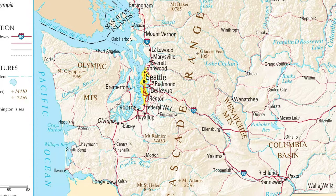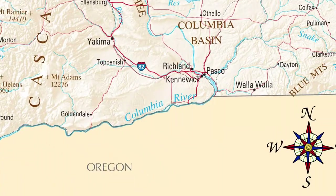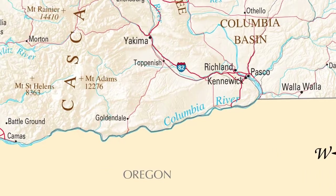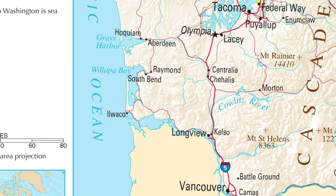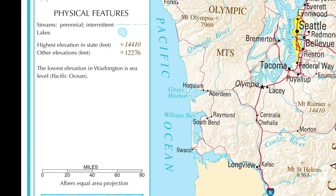The Columbia River is a large river between Washington and Oregon. Interstate 5, or I-5, is an important highway in Washington State. Last, the Pacific Ocean is to the west of Washington State.